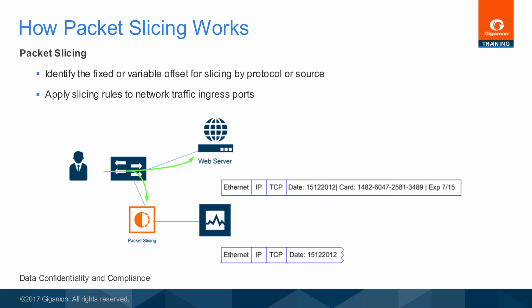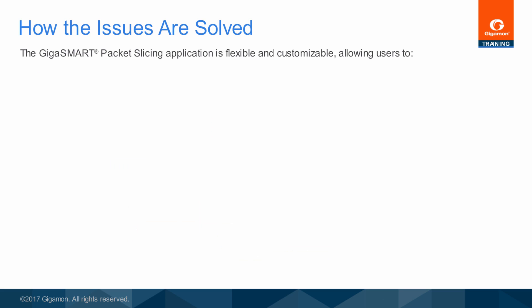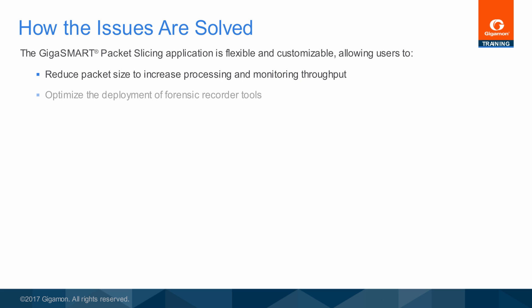As with data masking, with slicing enabled, it is less likely to have a compliance failure when the sensitive data is not present. The GigaSmart Packet Slicing application can improve tool performance by reducing the packet size, which in turn increases throughput. Also, full packets consume available bandwidth on the tool NIC. If the full payload is not required, then removing the data payload actually improves tool throughput by allowing the tool to receive more packets.